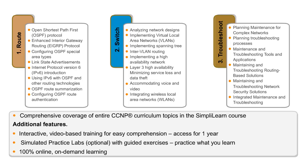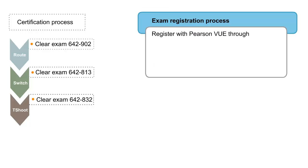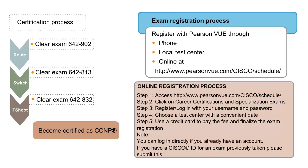In the next section, we will discuss the certification process for CCNP. As can be seen on the screen, there are three separate exams for each of the three areas: Route, Switch, and T-Shoot. One has to clear all three exams to become a CCNP. You can register for any of the exams with Pearson VUE, either online, by phone, or by visiting your nearest Pearson test centre. The online registration steps are outlined on the screen.